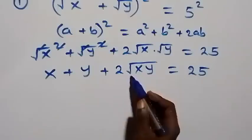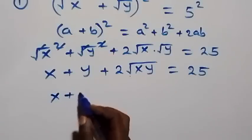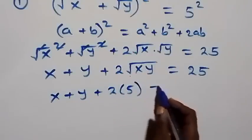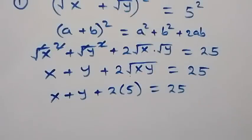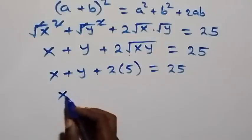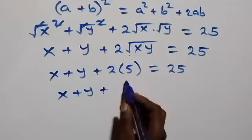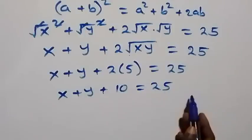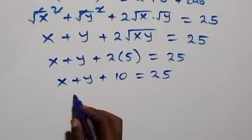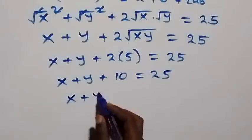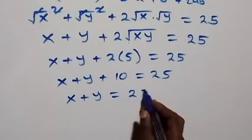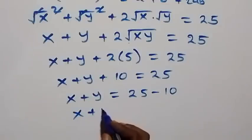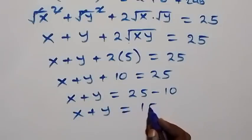So we substitute that in: x + y + 2 × 5 = 25, which gives x + y + 10 = 25, and therefore x + y = 25 − 10 = 15.